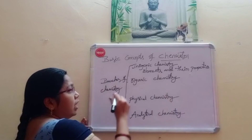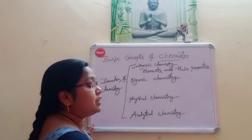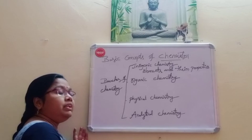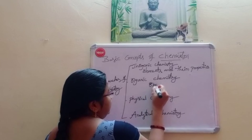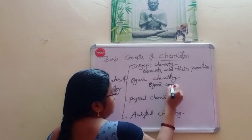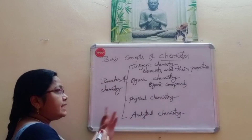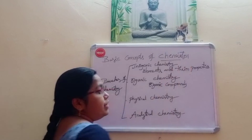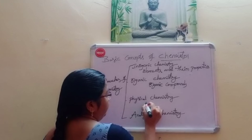Organic chemistry is a branch of chemistry which deals with organic compounds produced by living organisms. Physical chemistry is a branch of chemistry which deals with the explanation of fundamental principles.